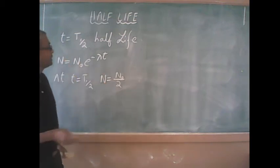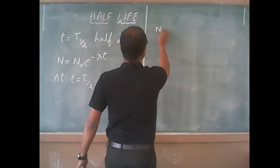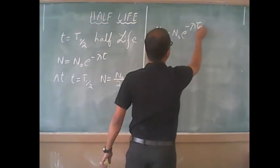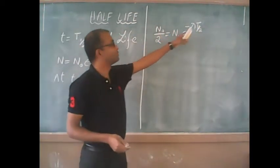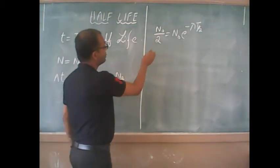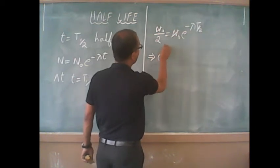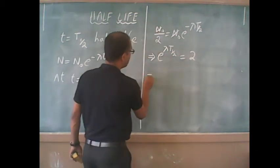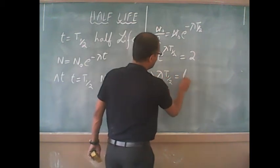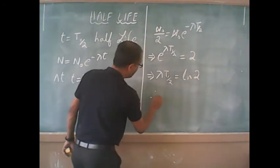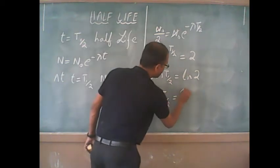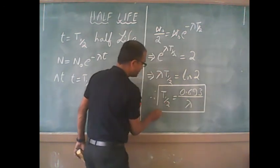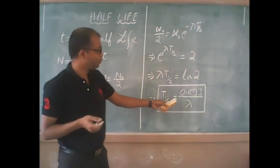Putting this back in the expression, we have n₀ divided by 2 equals n₀ e to the power minus lambda t_half. We are substituting t equals t_half into the expression. Simplifying, we get e to the power lambda t_half equals 2, which implies lambda t_half equals natural log 2. Therefore, t_half equals 0.693 divided by lambda. This is a very important expression which relates the half-life of the radioactive substance with the disintegration constant.